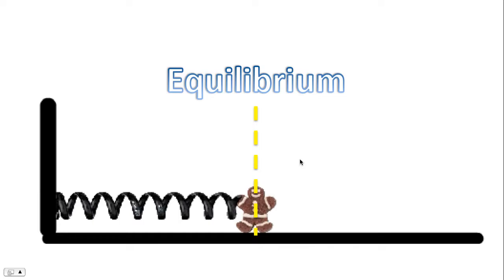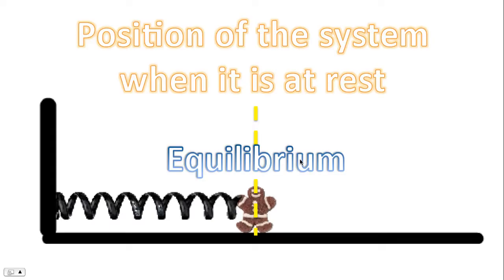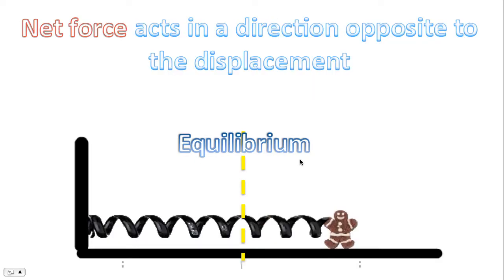Let's explore those three conditions. First off, the term equilibrium — equilibrium represents the position of the system when it is at rest. Net force acts in the direction opposite to the displacement. So in this case, when the gingerbread man — the mass — is towards the right of the equilibrium, the net force acts towards the left. This is the spring force. The spring force always pulls the object back towards equilibrium.